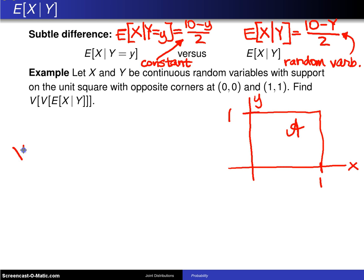And what we want to find here is the variance of the variance of the expected value of X given Y. This looks like alphabet soup. But the way to unwind this thing is to start from the center.